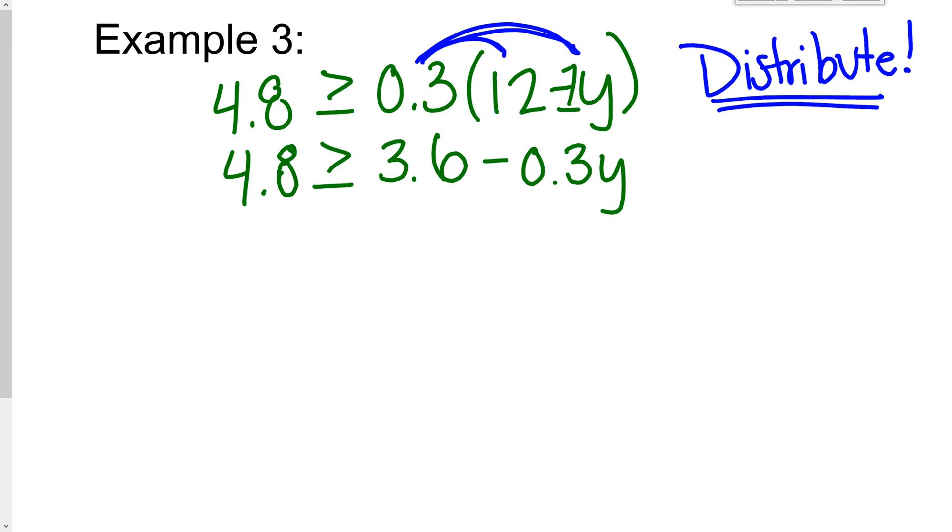Now I have my two-step. And I solve. So I minus 3.6 from each side right there on my left-hand side. I'm going to be left with 1. Let me cross that out.